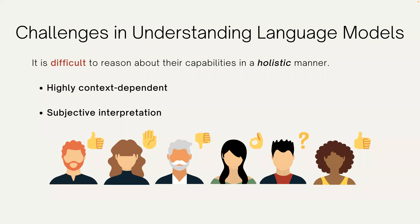Second, even if we look at one specific piece of text, it can be subjectively interpreted. There are many viable definitions of good collaboration. Some people may want creative new ideas from the system, whereas others may want more coherent, predictable autocompletions. Based on these different goals, the assessment of the same text could vary a lot.